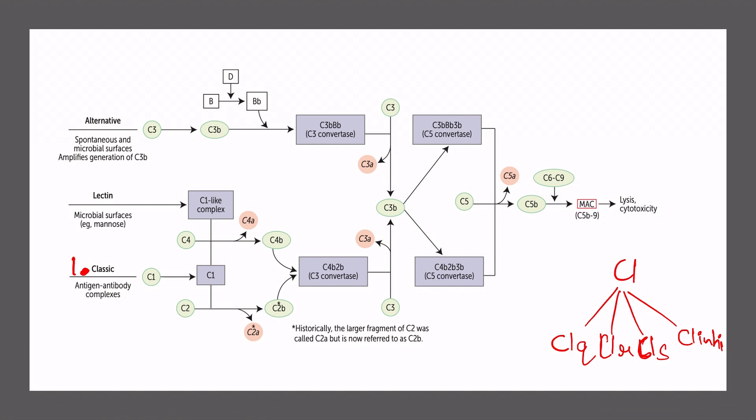Active C1 will actually cleave C4 to C4A and C4B as shown in the picture. Also the C1 will convert C2 to C2A and C2B. Further, C4B and C2B together will form a complex C4B2B. This is also known as C3 convertase. Our prime goal in any pathway is to make C3 convertase so that we can finally achieve C3B. This is the first part of the pathway.